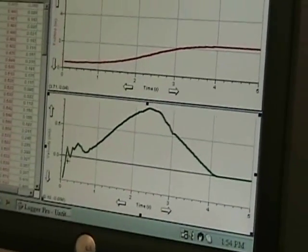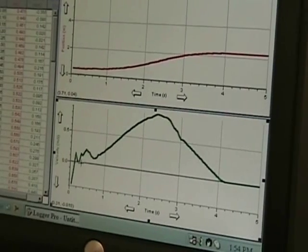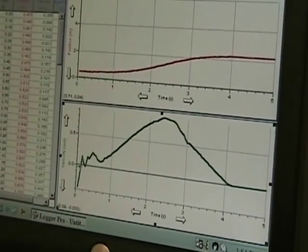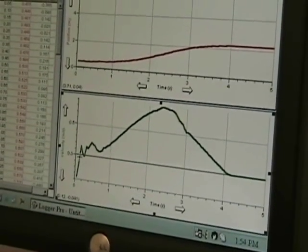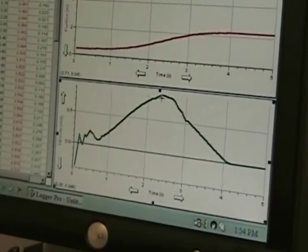The bottom graph is the more important graph. It started off here at zero and as the car left, it sped up to its maximum kinetic energy.